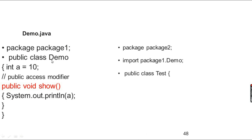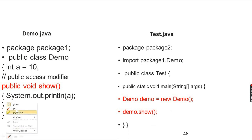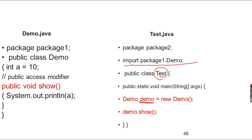The Test class is in package2. We import package1 demo. So if this package is required to import, we use import and the same package demo. This is a public class Test. Public static void main String args — here is the main method. We define a Demo object: Demo demo = new Demo. Then we call demo dot show.